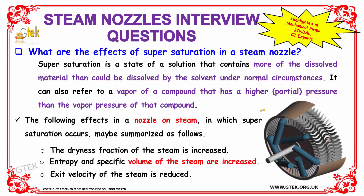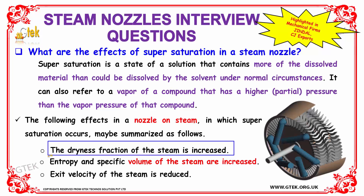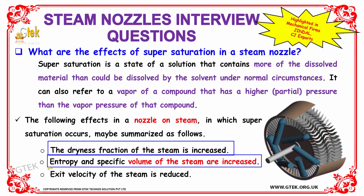What are the effects of supersaturation in a steam nozzle? Supersaturation is a state of a solution that contains more of the dissolved material than could be dissolved by the solvent under normal circumstances. It can also refer to a vapor of a compound that has higher pressure than the vapor pressure of the compound. The effects on steam in a nozzle where supersaturation occurs are: the dryness fraction of the steam is increased; the entropy and specific volume of steam are increased; and the exit velocity of the steam is reduced.